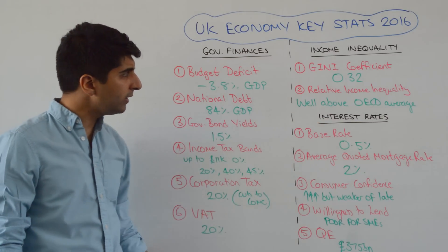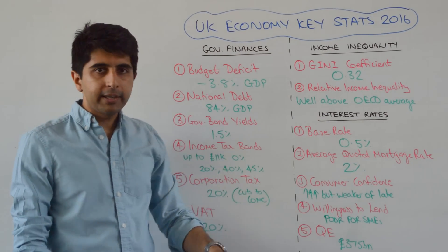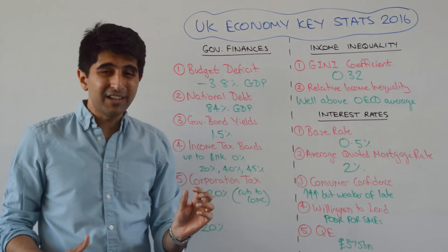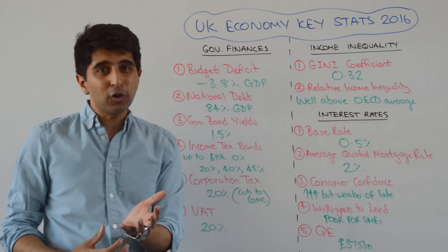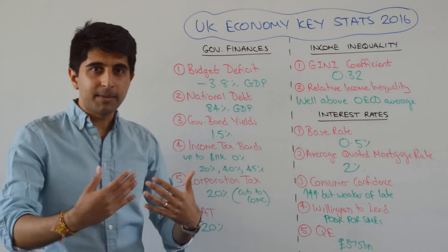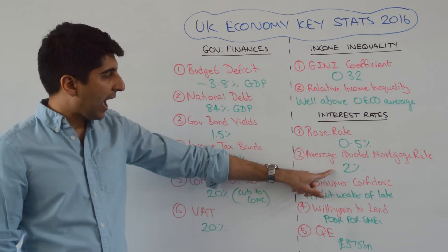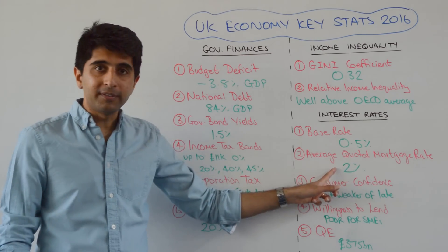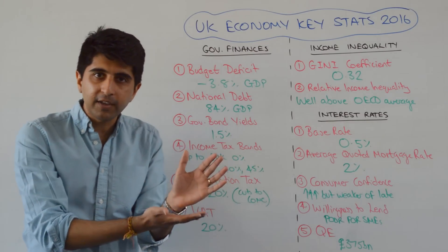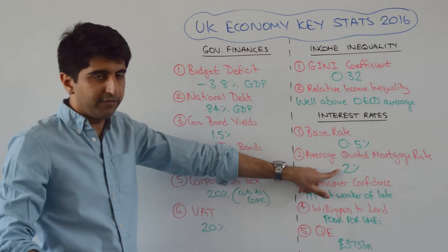What about interest rates and monetary policy? The central bank interest rate is 0.5% — it's been that for seven years, which is a sign of real weakness in the economy. We need cheap credit and debt-fuelled growth for our growth to be maintained. Average quoted mortgage rates are at 2%, and that tells you that the transmission mechanism isn't perfect — although mortgage rates have come down significantly.